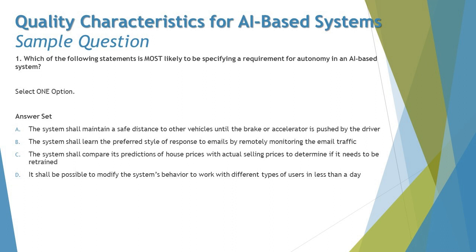Option B says: the system shall learn the preferred style of response to emails by remotely monitoring the email traffic. Depending on the traffic it should decide what response to send. This does not sound like the most relevant requirement for autonomy, because the requirement is specifying a required function for how the system shall perform self-learning, not autonomous decision-making.